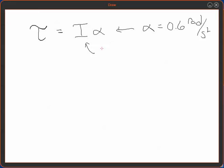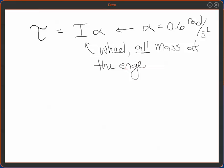What's I? For a wheel, all the mass is at the edge. And so when you go to sum all of the little pieces of mass and their distance squared from the center of rotation, you just get the whole mass of the wheel r squared.